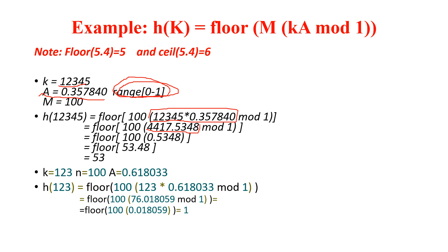After the multiplication, I mod with 1. After the mod, I get 0.5348 — the fractional part. Then I multiply with the table size, which is 100. After multiplication with the table size, I get 53.4. Then I take the floor of this value and I get 53.